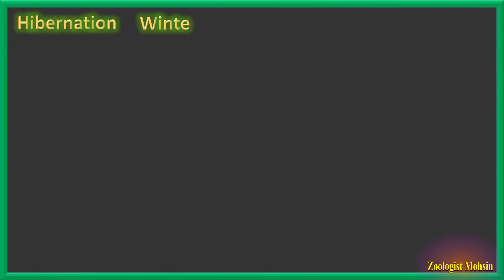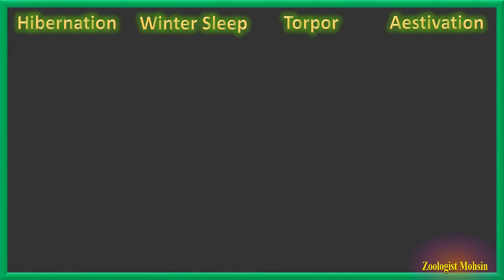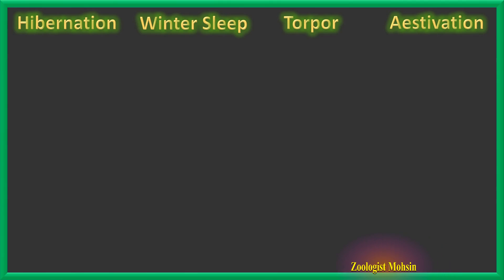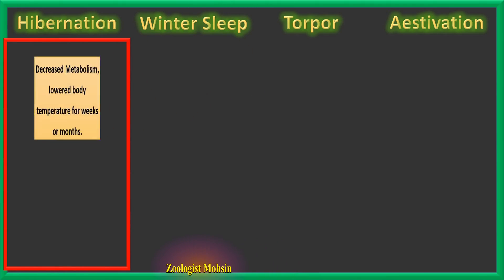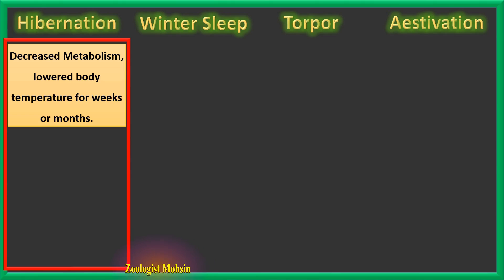What is the difference between hibernation, winter sleep, torpor, and estivation? These are all confusing terms. The basic difference is how much the temperature falls in each condition, what season of the year it occurs, and the duration of the condition. Hibernation is decreased metabolism with a lowered body temperature lasting for weeks or months.